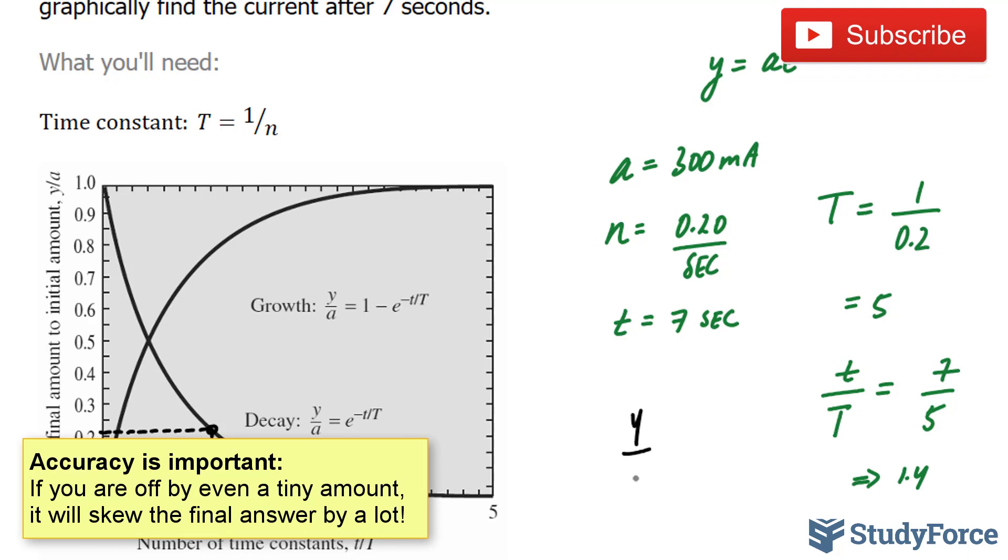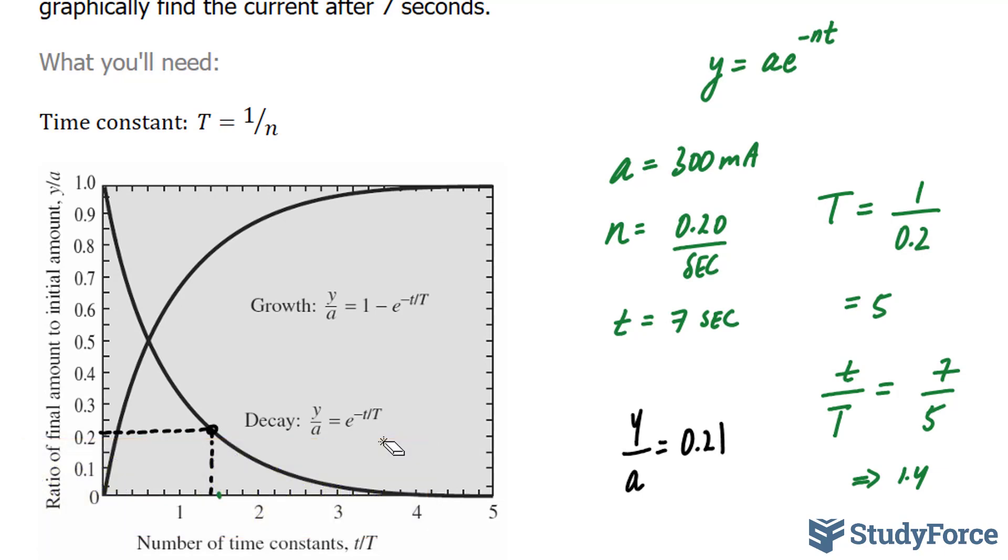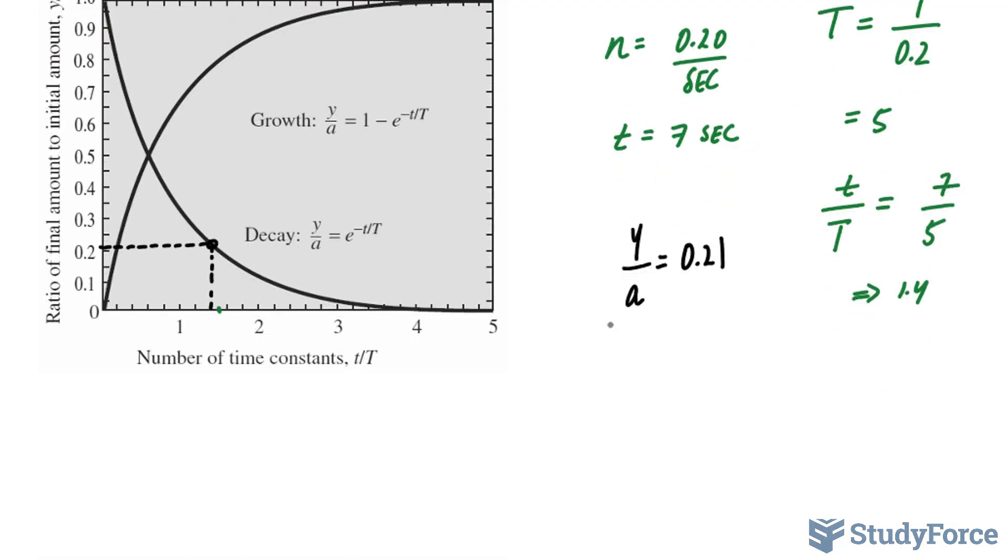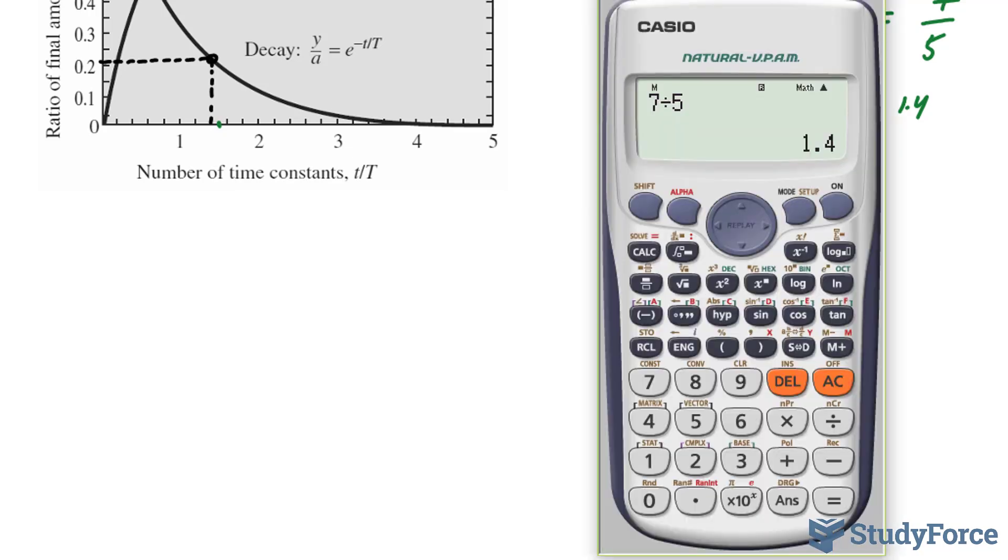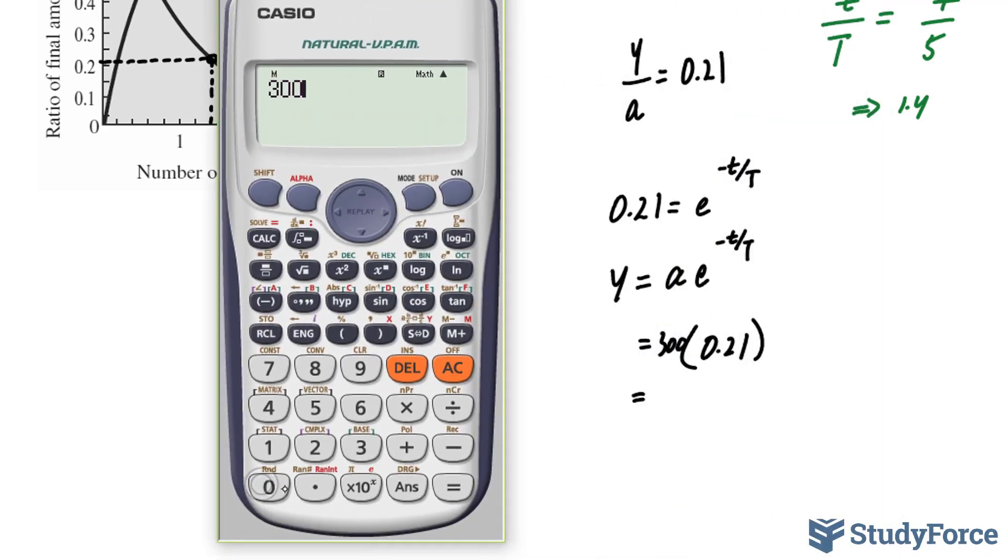So y over a is equal to 0.21. Now that I've found 0.21, I can make this equal to e to the power of negative t over big T. Y is equal to a, going back to this equation, times e to the power of little t over big T. So let's see, this is equal to 0.21. We know we started off with 300. Now let's find out what will happen after 7 seconds. So 300 times 0.21 gives us around 63.